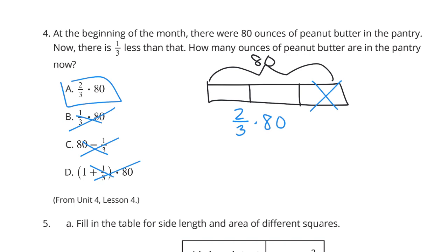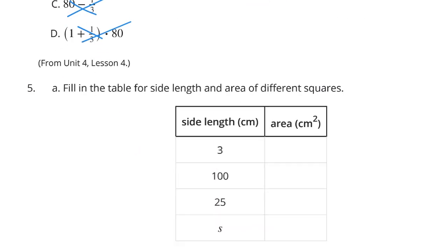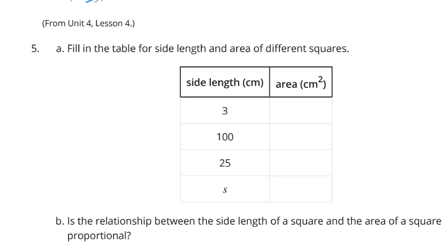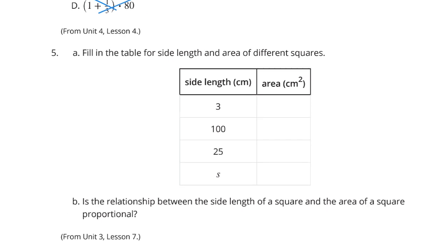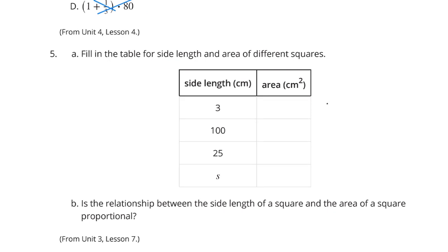In problem 5, which is review from Unit 3 Lesson 7, fill in the table for the side length and area of different squares. Well, if we have a side length of 3, for squares, we can take 3 and multiply by 3 to get 9. One hundred times one hundred is 10,000. Twenty-five times twenty-five is 625. And S times S is S squared.